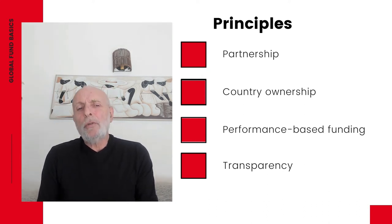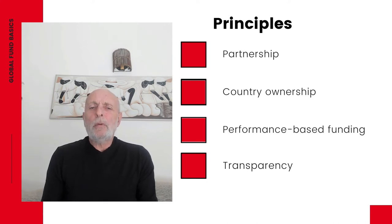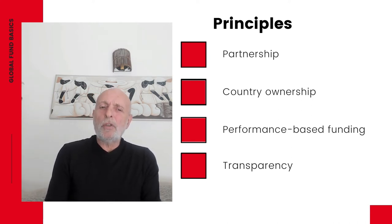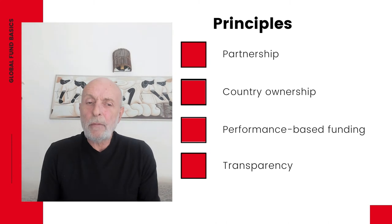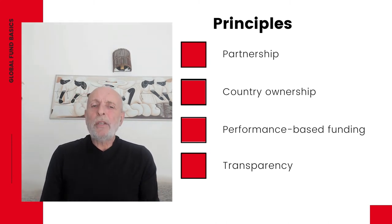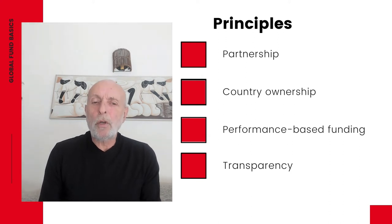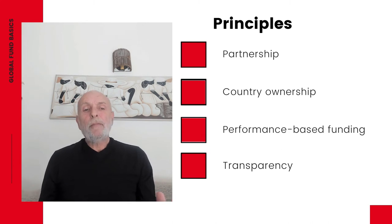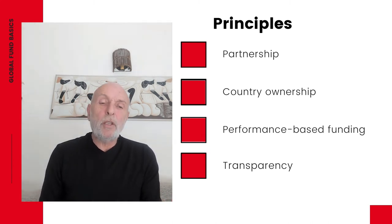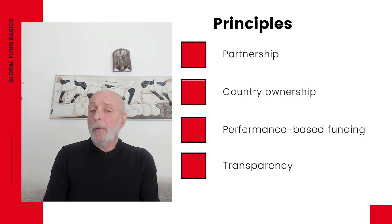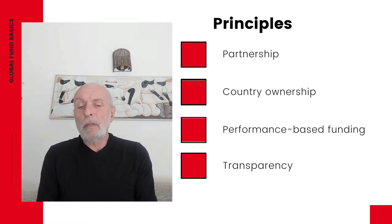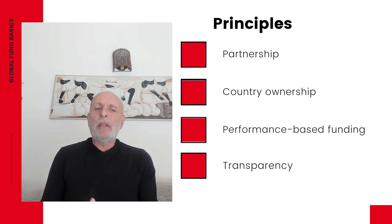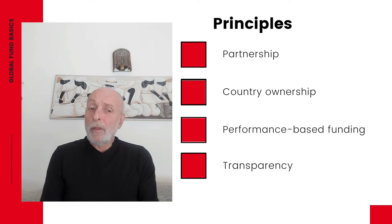The second principle is country ownership, which means that people determine their own solutions to fighting the three diseases. Each country tailors its response to the political, cultural, and epidemiological context of that country. Unfortunately, this is too often interpreted as government ownership, and key populations like sex workers struggle to have an influence on decisions, but the principle is country ownership.